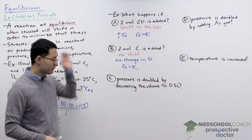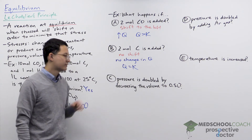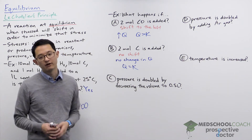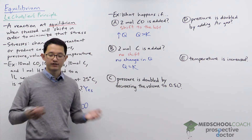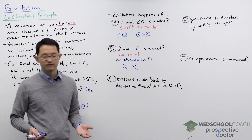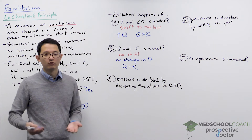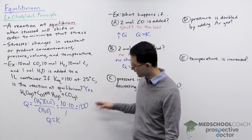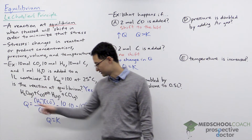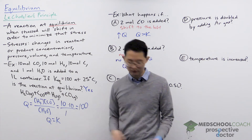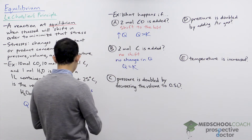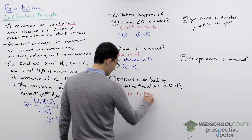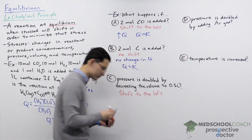What if we were to double the pressure by decreasing the volume to half a liter? When you increase pressure, the system shifts in the direction with fewer moles of gas. We have 1 mole of gas in our reactants and 2 moles of gas in our products, so the reaction shifts to the left. Decreasing the volume to half a liter doubles the concentrations of all species: hydrogen and carbon monoxide each go from 10 M to 20 M, and water from 1 M to 2 M. Q becomes 400/2 = 200, which is greater than K = 100, so the reaction shifts left.